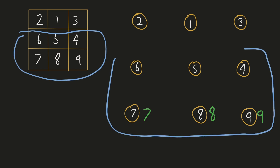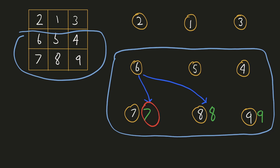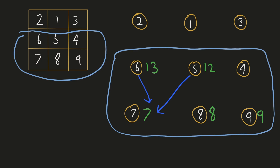If we consider the last two rows together, for each element in the second-last row we again have three choices. We have already computed the falling path starting from the elements in the row below. The falling path for each element in the second-last row only depends on those pre-computed values. To minimize the falling path, we choose the minimum of the three falling paths below. For example, the minimum falling path starting at 6 is 6 plus the minimum of the three choices below, and at 4 it would be 4 plus 8, giving 12.